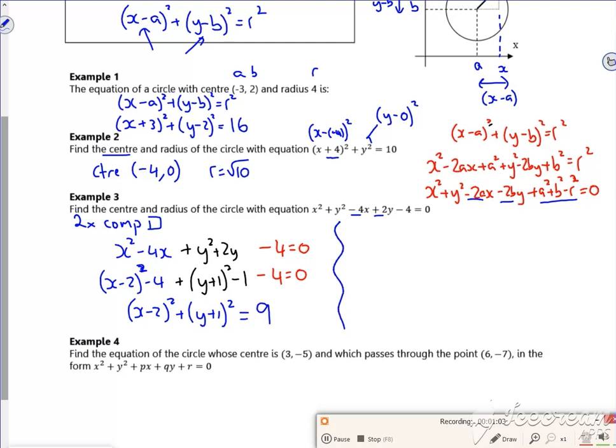So that then tells me that my centre is 2 comma minus 1, and my radius is root 9, which is 3. There, that's quite nice, isn't it?